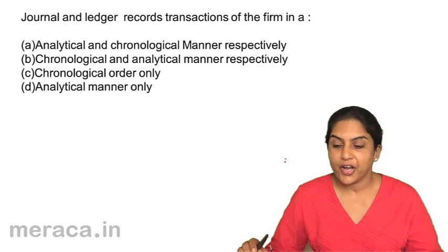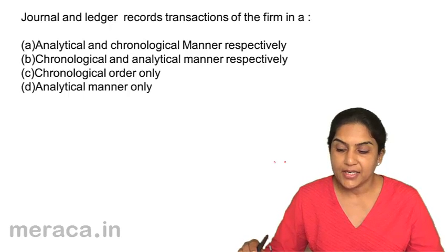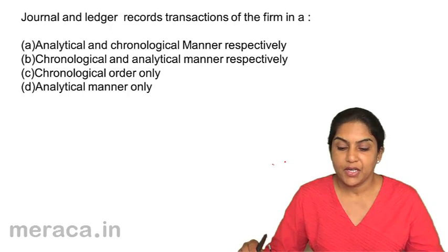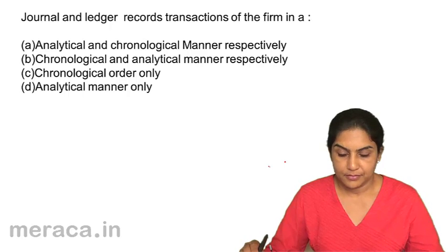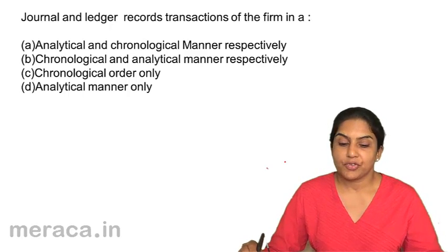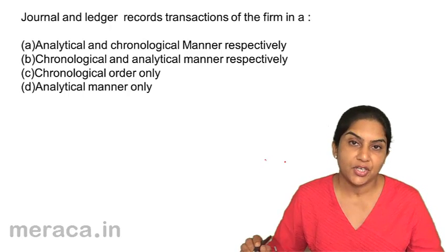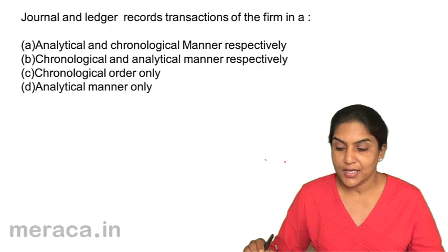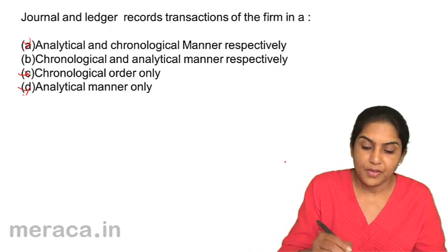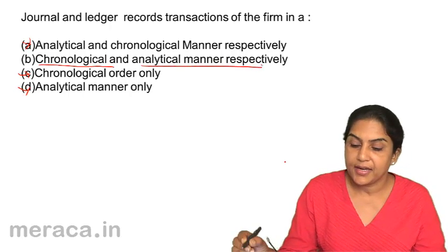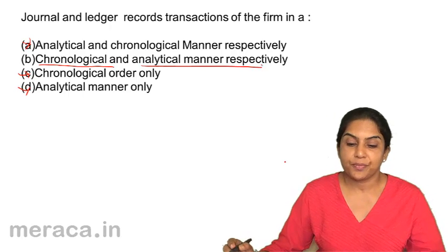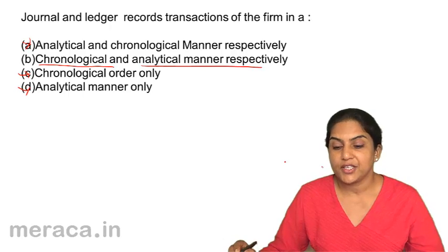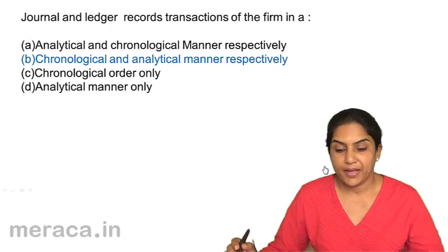Journal and ledger record transactions of the firm in: A. Analytical and chronological manner respectively, B. Chronological and analytical manner respectively, C. Chronological order only, D. Analytical manner only. Journal records transactions in a chronological manner; ledger records them in an analytical manner. Therefore, the correct answer is B: journal in chronological order, ledger in analytical manner.